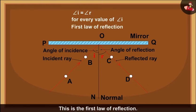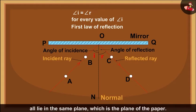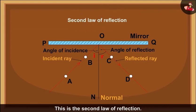This is the first law of reflection. You can also notice that the incident ray, the reflected ray, and the normal all lie in the same plane, which is the plane of the paper. This is the second law of reflection.